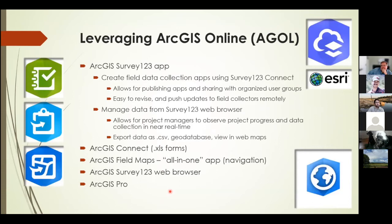Leveraging ArcGIS Online — AGOL — the DOI has adopted this approach and it's a good way to centralize and manage data. We've gone from ArcMap to ArcPro now, and AGOL has all kinds of functionalities. The Survey123 applications are created using ArcGIS Connect, and there are navigation apps in the field using Field Maps. ArcGIS Online has many functions and capabilities that can help increase efficiency when implementing these types of protocols.